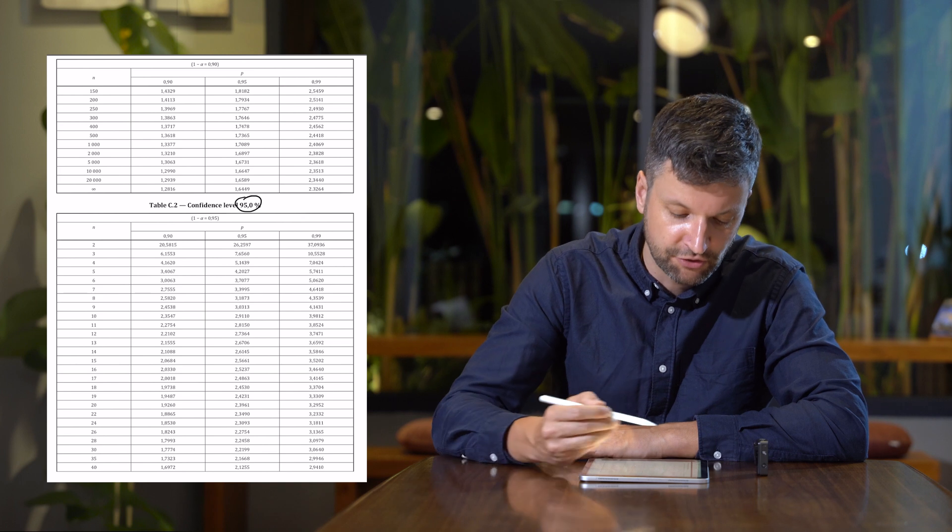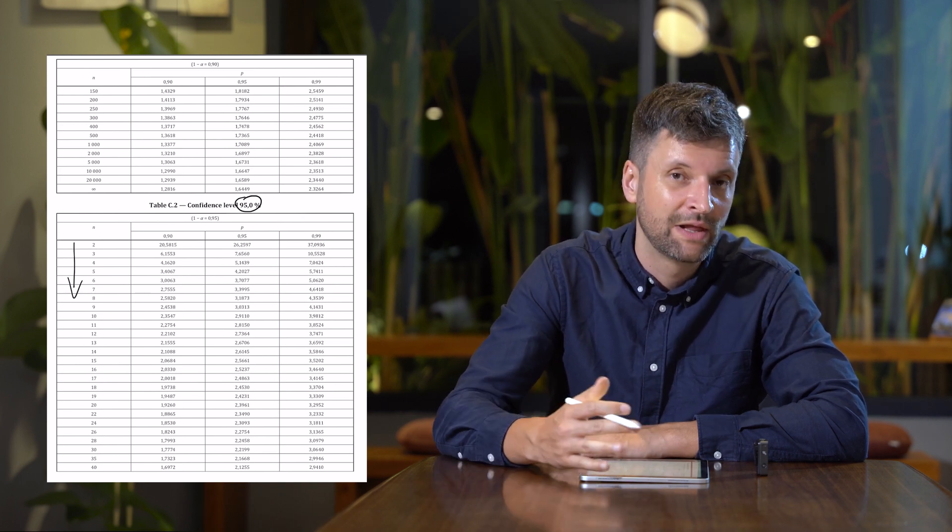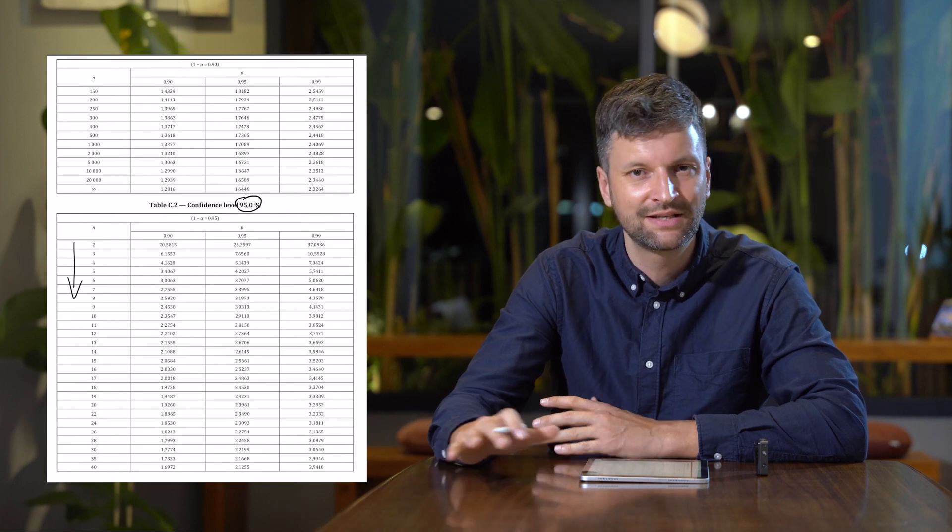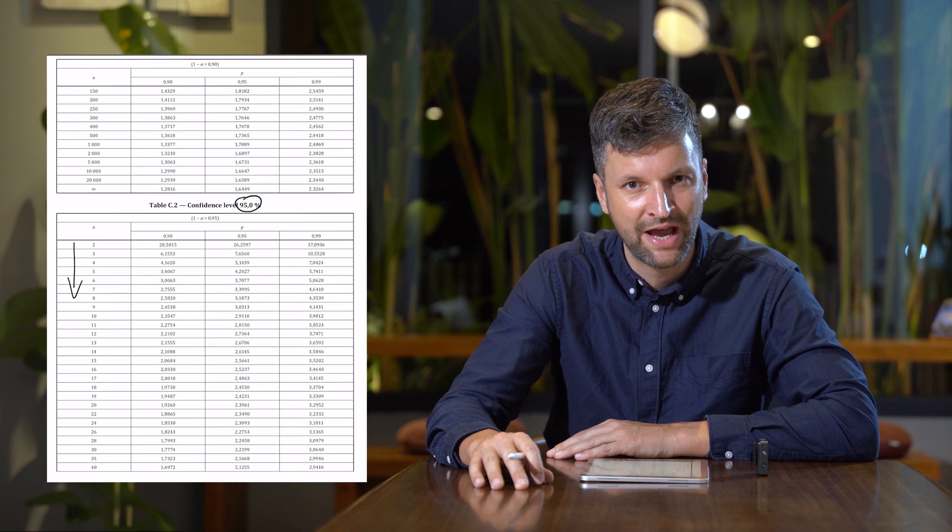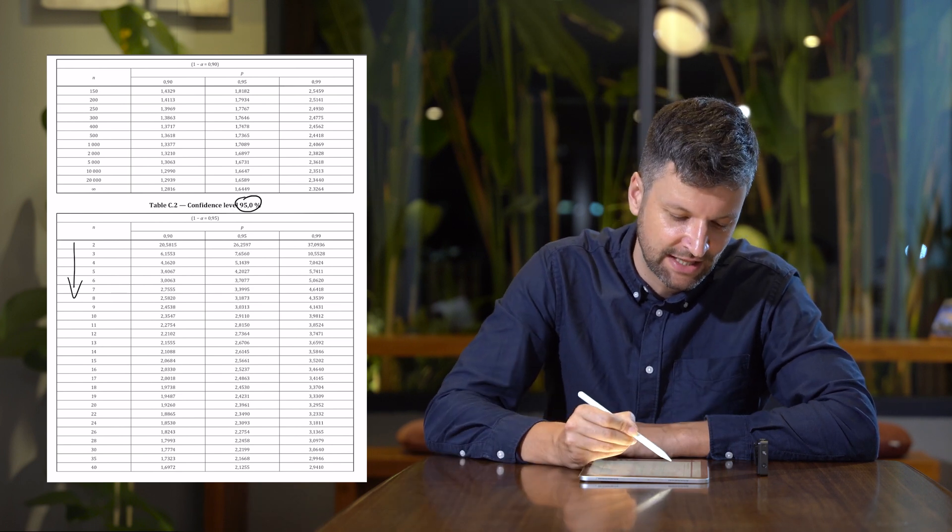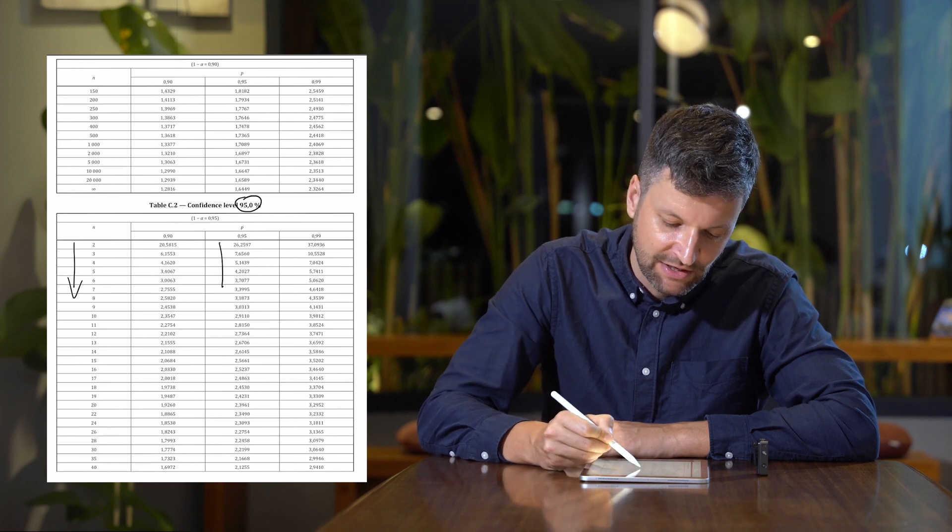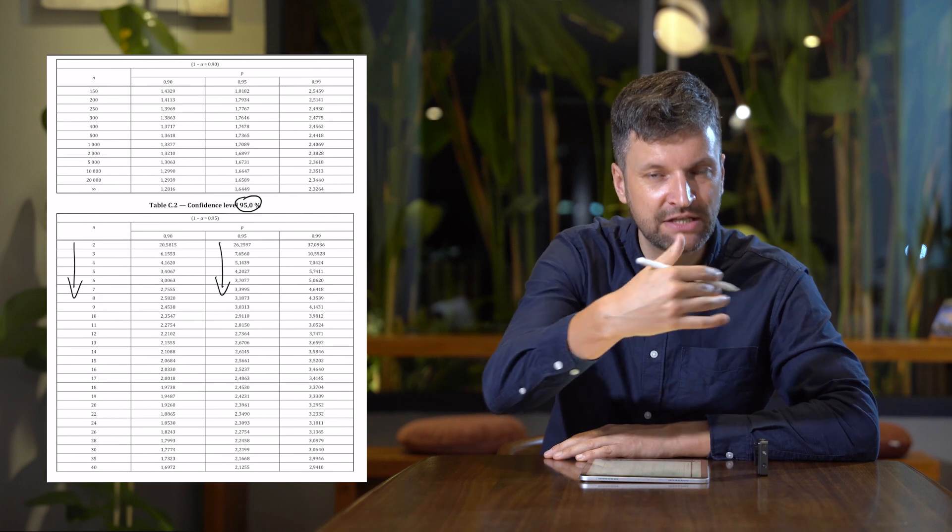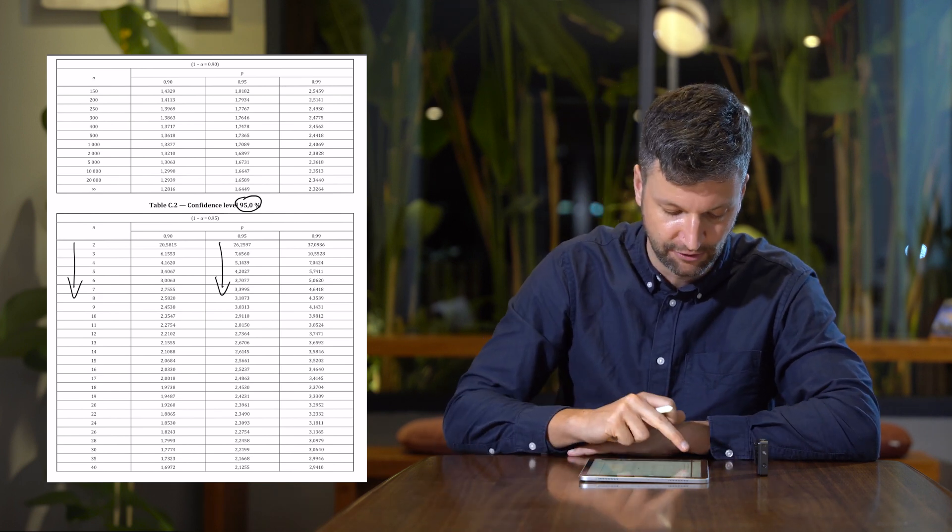What you can also recognize is to the very left, the sample size N. Well, whenever we talk about statistics, one thing is true: the more samples you take, the more information you have about your population. So what we can see here is that when N increases, the K value decreases. So with an increase of N, we have a decrease of the K value.